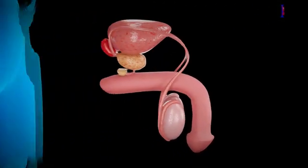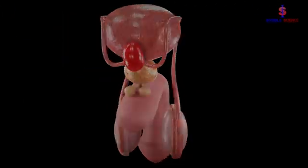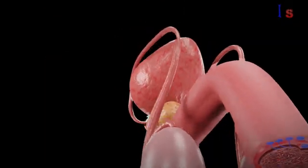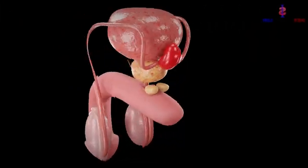When the penis is not erect, only a small amount of blood flows through the corpora cavernosa, and the veins on the upper part are open and filled. At this time, the penis is soft and flexible.